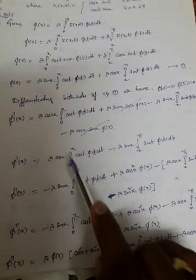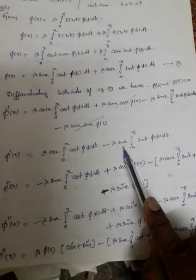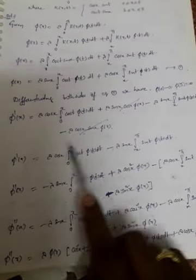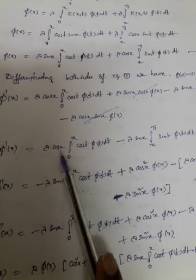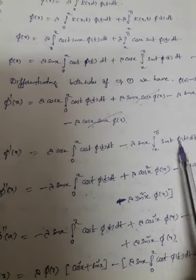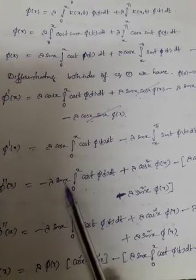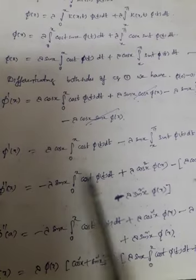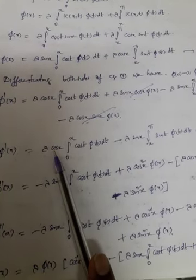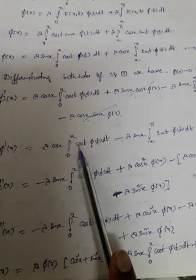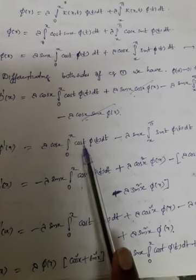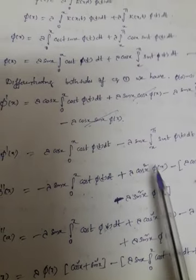Differentiating again with respect to x: we apply the product rule again. The term lambda cos(x) differentiates to give minus lambda sin(x) times the integral from 0 to x of cos(t) phi(t) dt, plus lambda cos²(x) phi(x). For the second term, lambda sin(x) differentiates to give lambda cos(x) times the integral from x to pi, and the boundary term gives lambda sin²(x) phi(x).